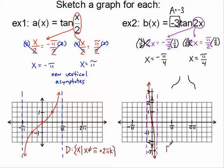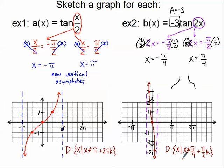Let's do the domain. Infinite restrictions again: all x such that x is not equal to. The first asymptote in the positive direction is pi over 4, so x can't equal pi over 4. The asymptotes repeat every 2 tick marks, which is pi over 2. So I add a multiple of pi over 2 k, and that represents all of my vertical asymptotes and my domain.